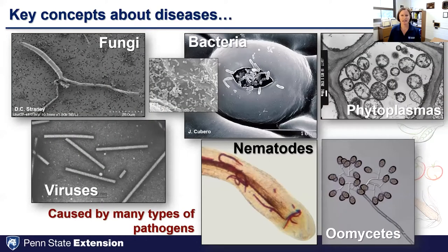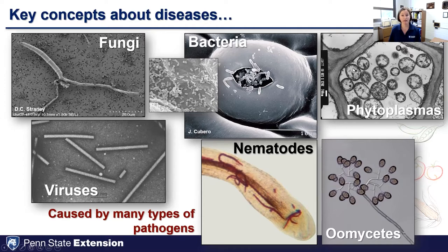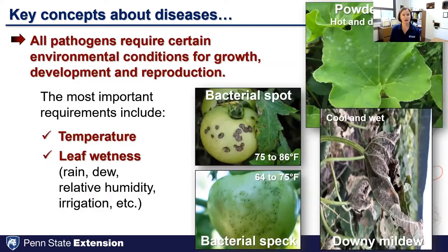Key concepts about diseases: they're caused by many different types of pathogens — fungal, bacterial, viruses, nematodes, oomycetes, and even phytoplasmas, which are similar to bacteria but must be vectored by an insect pest. Depending on what diseases we have, we may focus on managing the pathogen itself, or in some cases we focus on managing the insect vector. In all cases, pathogens require certain environmental conditions for growth, development, and reproduction.